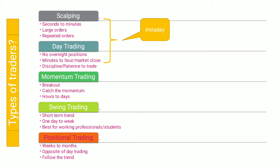The first type of trader is a scalper, or scalping. These traders try to have a lot of repetitive orders and they'll be in that particular stock or order for only a few seconds to a few minutes. For example, if a stock like Wipro is going to spike in a few seconds or minutes, they'll try to take advantage of that. To do scalping, you need a lot of experience — you should be able to tell whether the stock will go up or down.